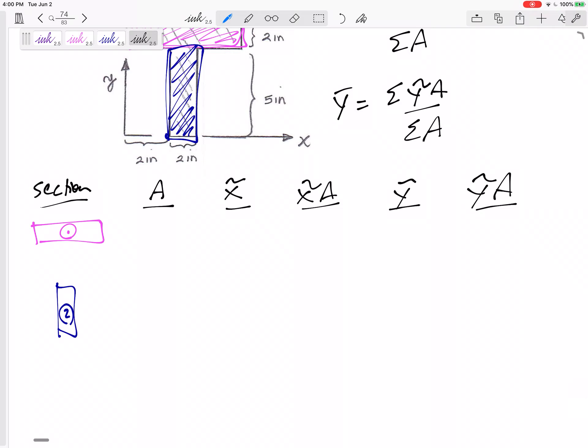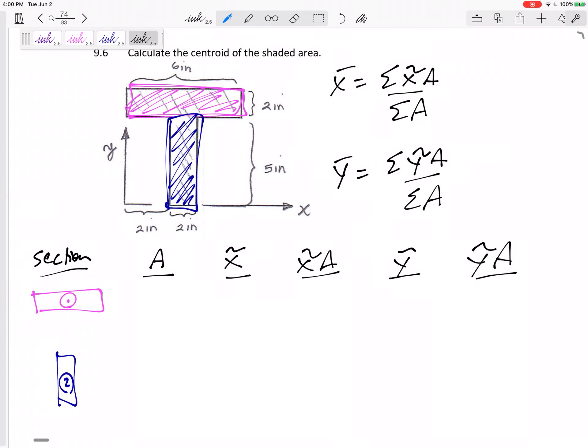If you just look at each section, find its area, x tilde, multiply them together, y tilde, multiply them together. All right. So you'll see how I do this.